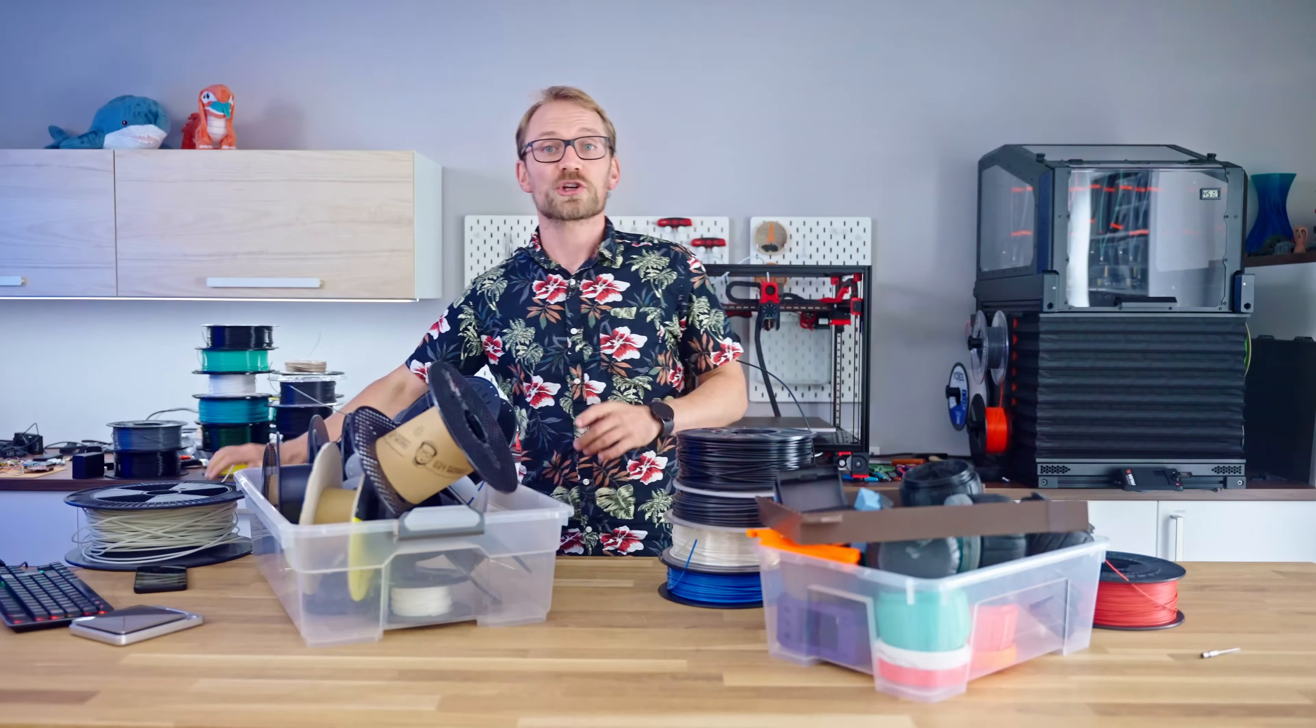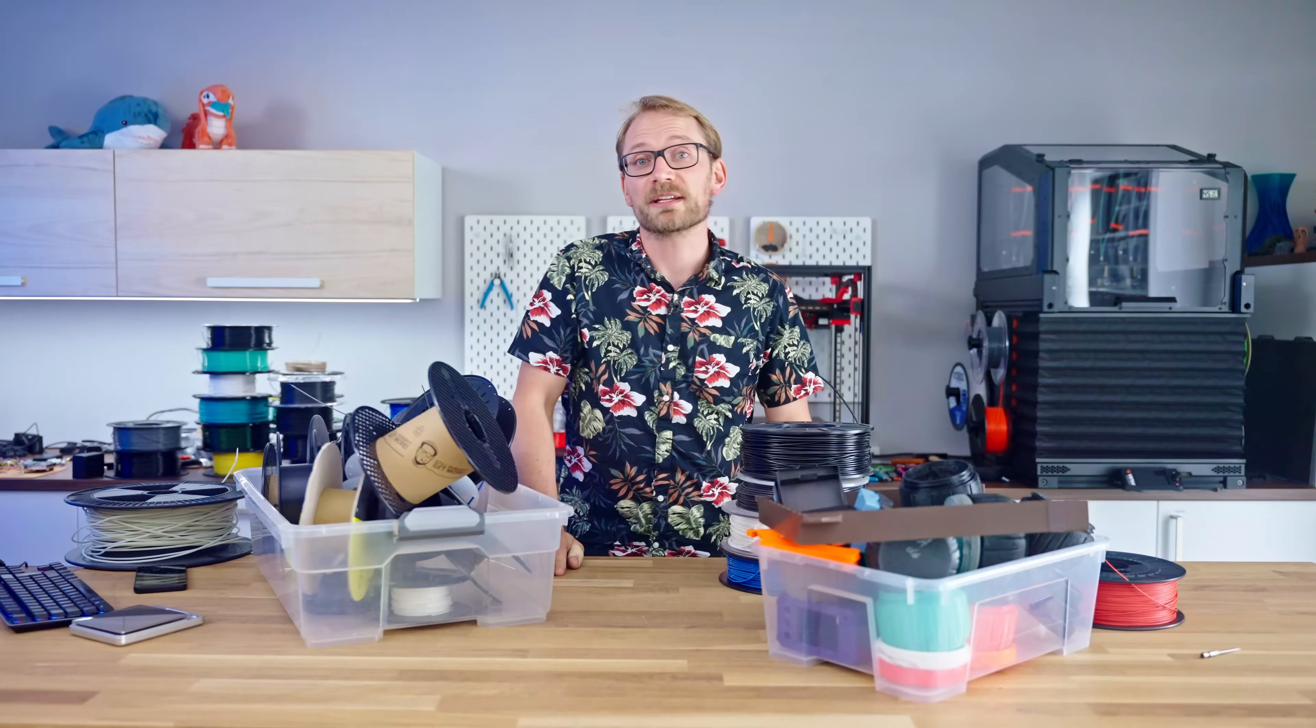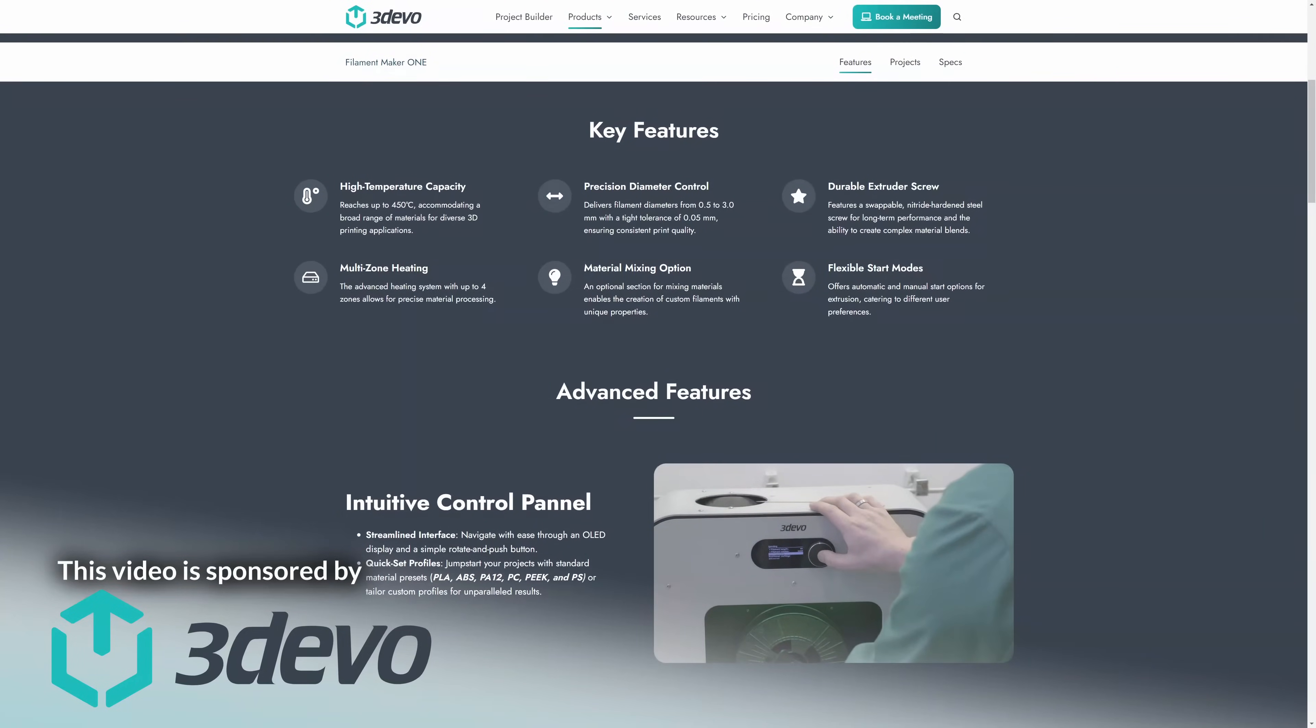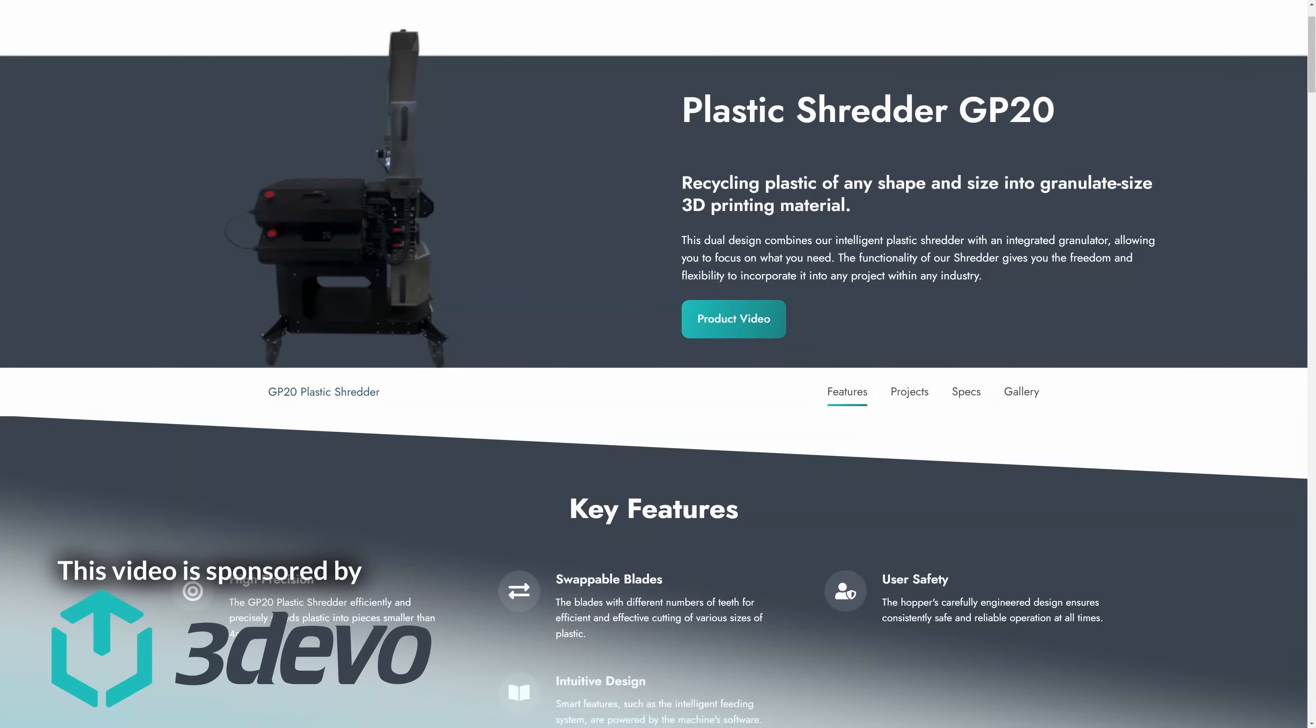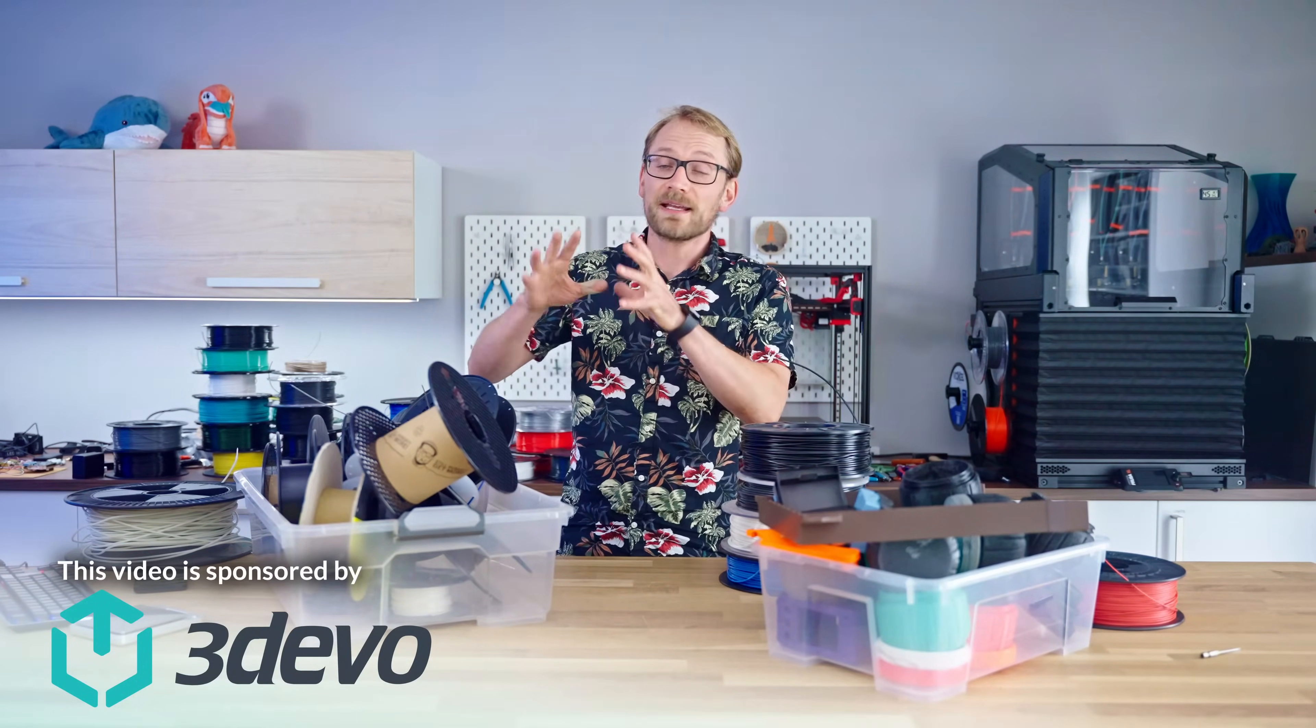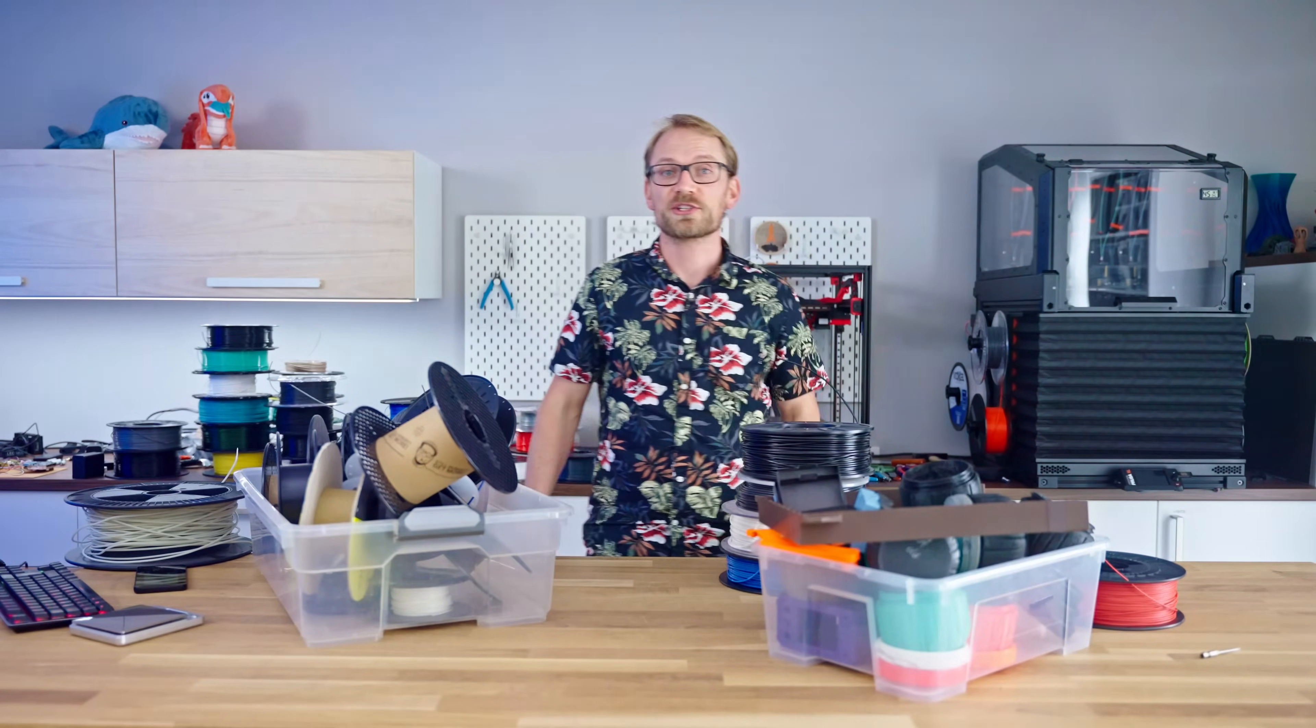Of course, this is going to involve shredding and re-extruding filament, so I got in touch with 3devo from the Netherlands and I got them to sponsor this video and to loan me one of their filament extruders, as well as their flagship plastic shredder and granulator units. Those are quite the machines, and they're too big and too heavy to use in my studio. In fact, they were delivered with a semi-truck on a pallet and that's sitting in my garage right now, so let's go check them out.